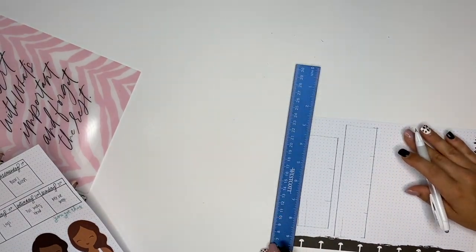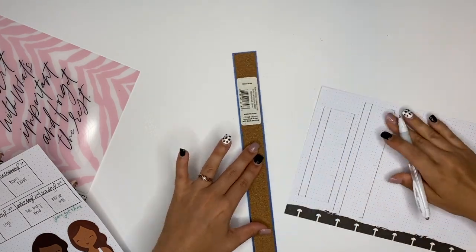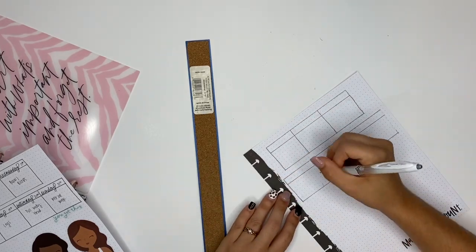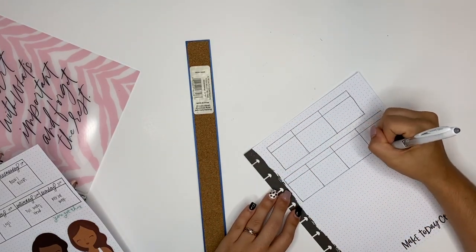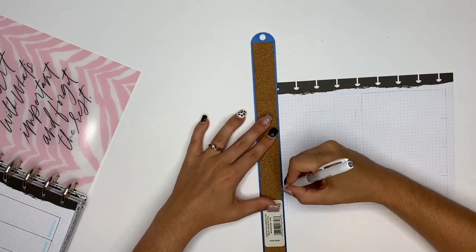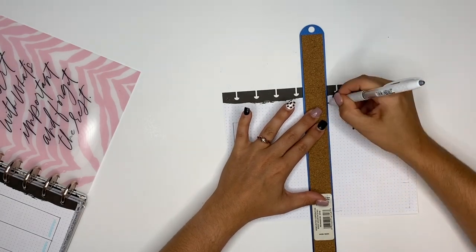However, for the shorter lines I do just kind of hand draw those. Now this side over here is pretty much all long lines, so I use the ruler to do them all.